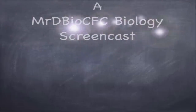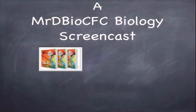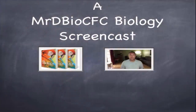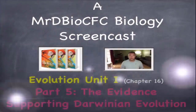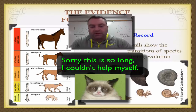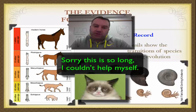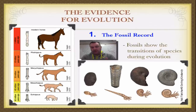Welcome to the fifth and final episode from this series on Darwinian evolution. In this episode we're going to go over what is the evidence that backs up Darwin's theory of natural selection.